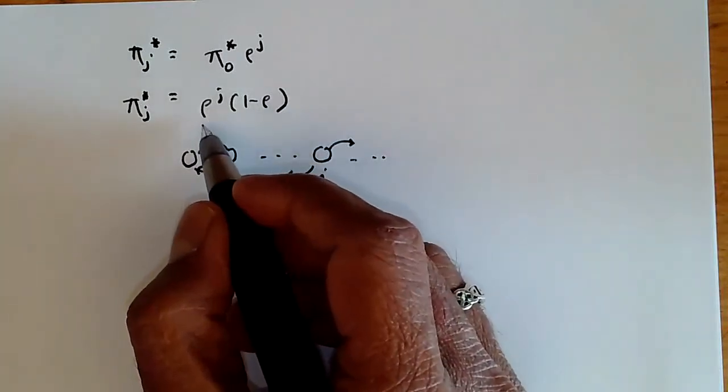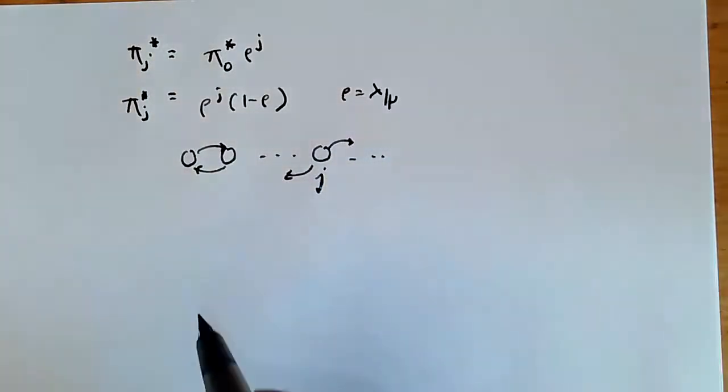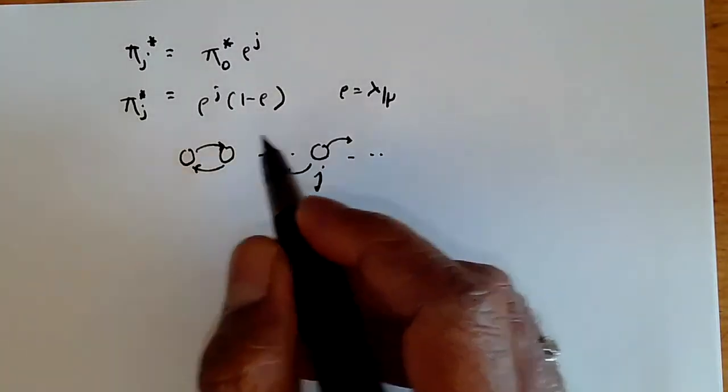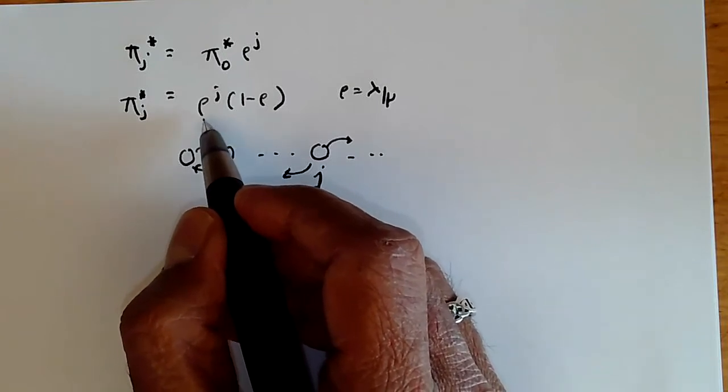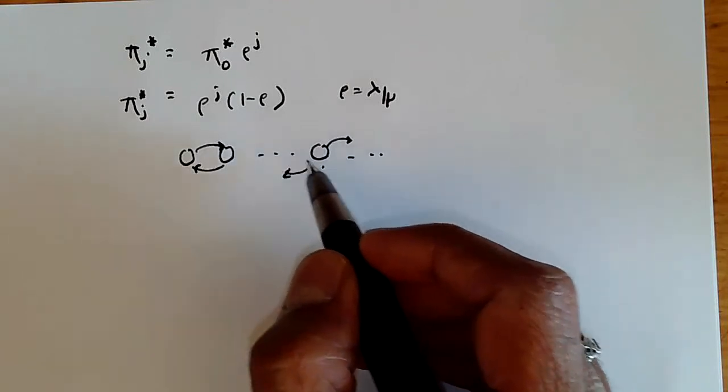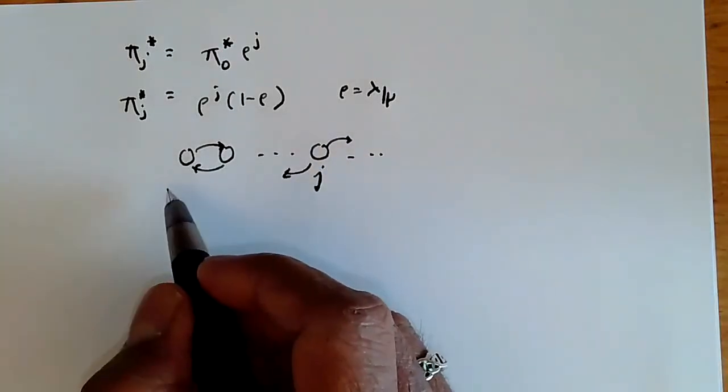Rho is of course a constant, just equal to lambda by mu. As we have larger and larger values of j, the probability that we're in that state declines by the value rho to the j. Of course, rho is less than 1, so we have a geometrically lower probability of being far away from the zero state.